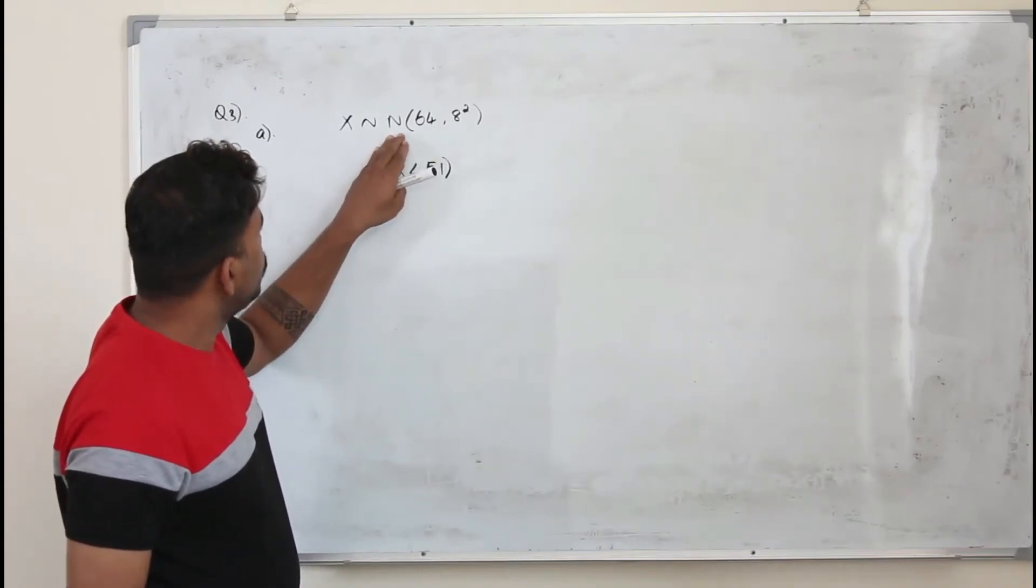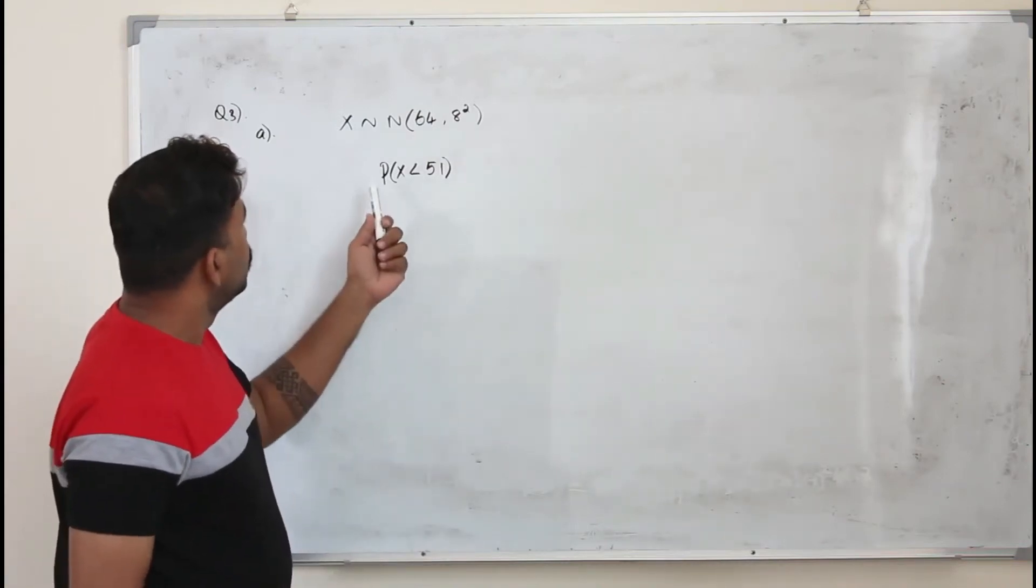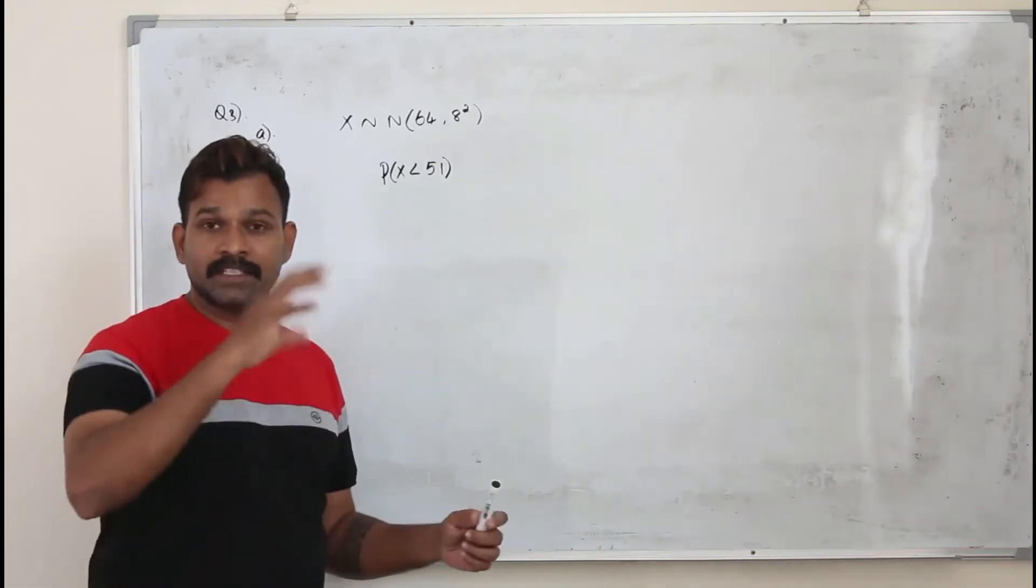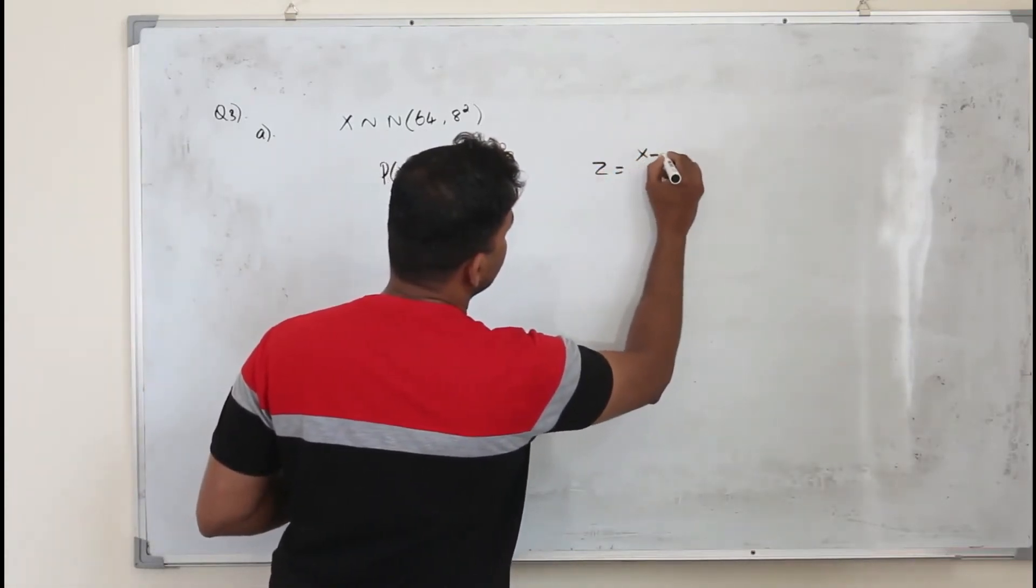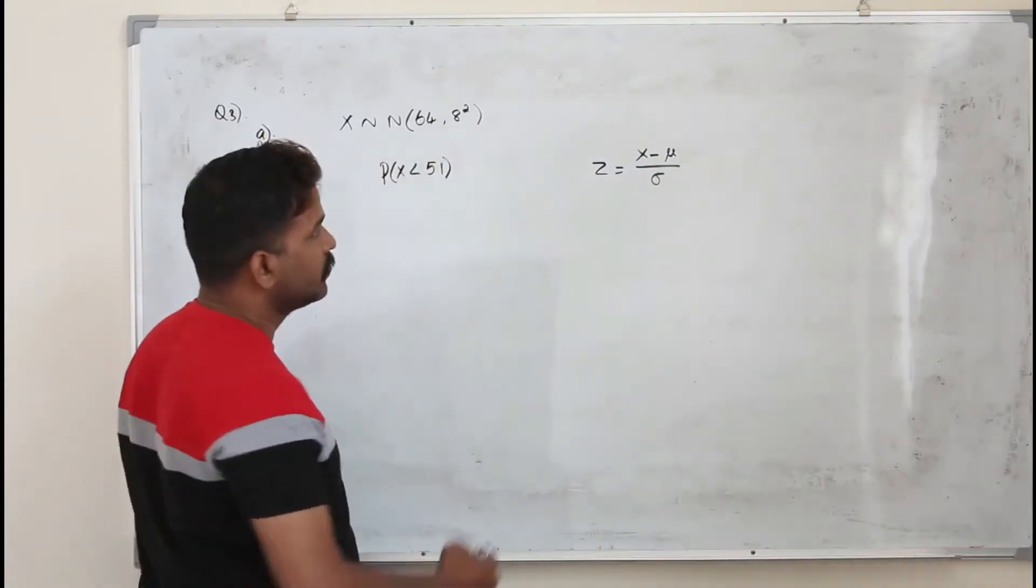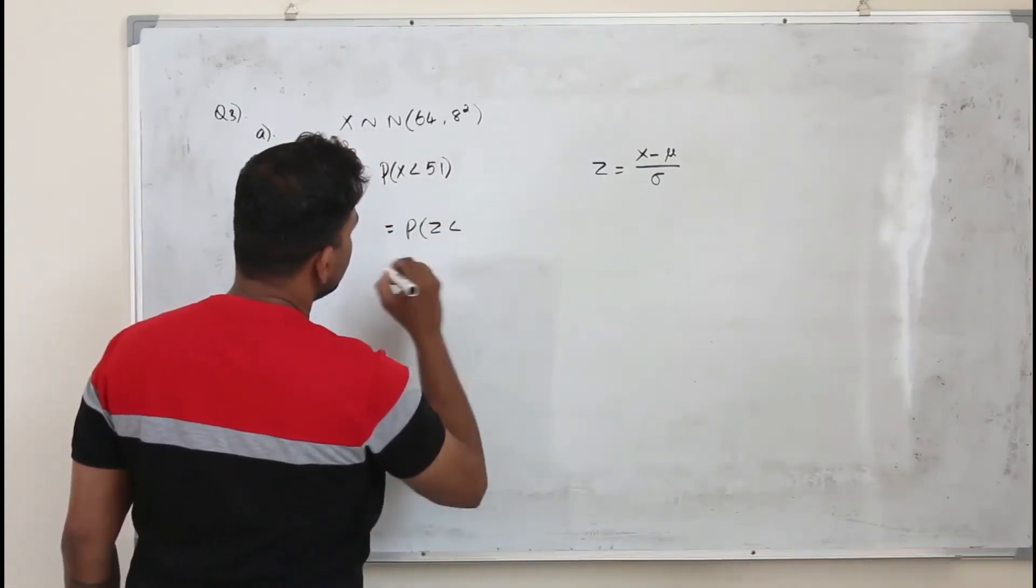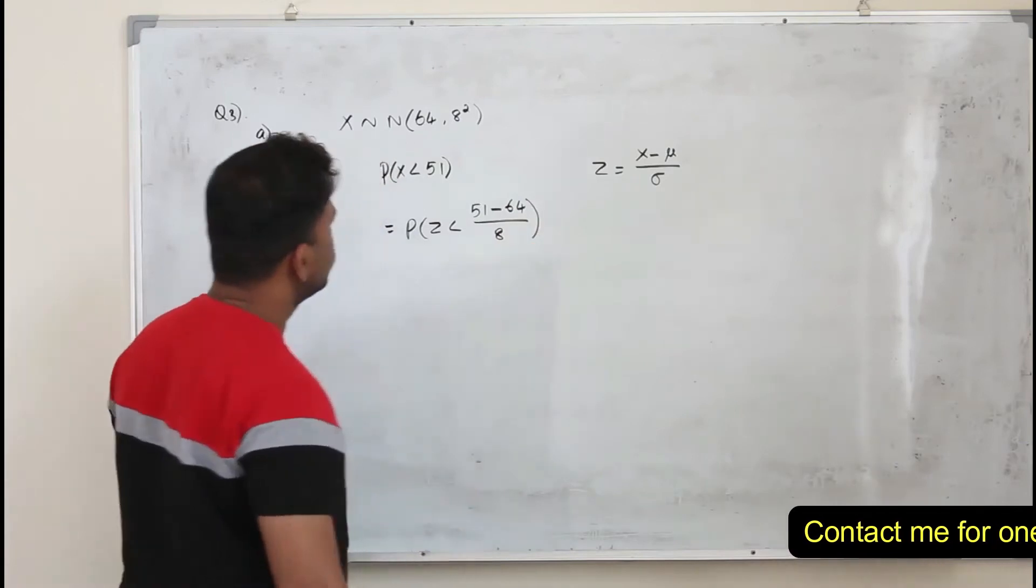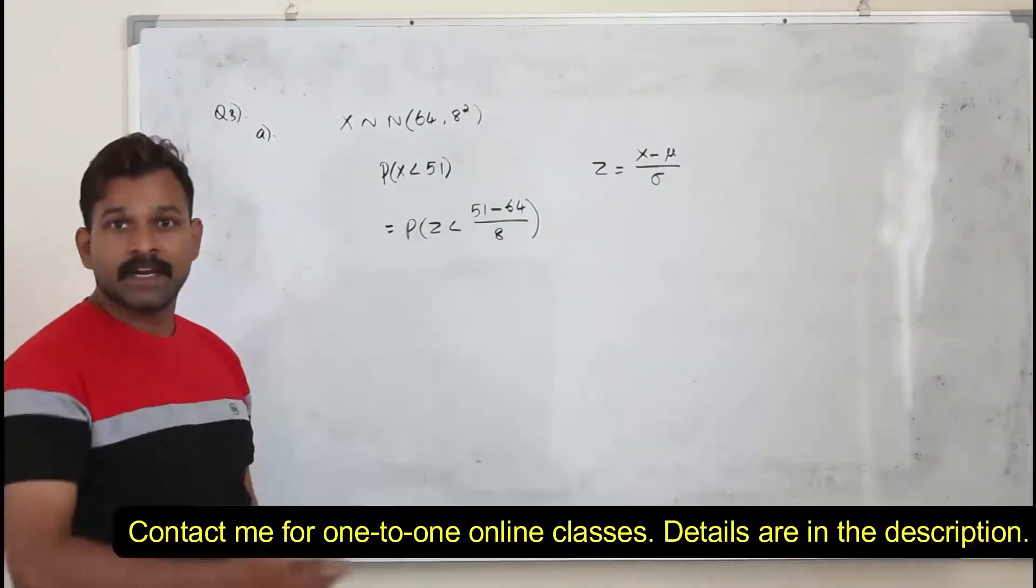X follows normal distribution with mean 64 and standard deviation 8. So they want you to find P of X less than 51. We need to convert X in terms of Z, the standard normal distribution. So take Z equals X minus mu over sigma. Mu is the mean, sigma is the standard deviation. So instead of this, we are going to find P of Z less than X minus mu over sigma. These two are the same. We have converted this variable into Z which follows the standard normal distribution.